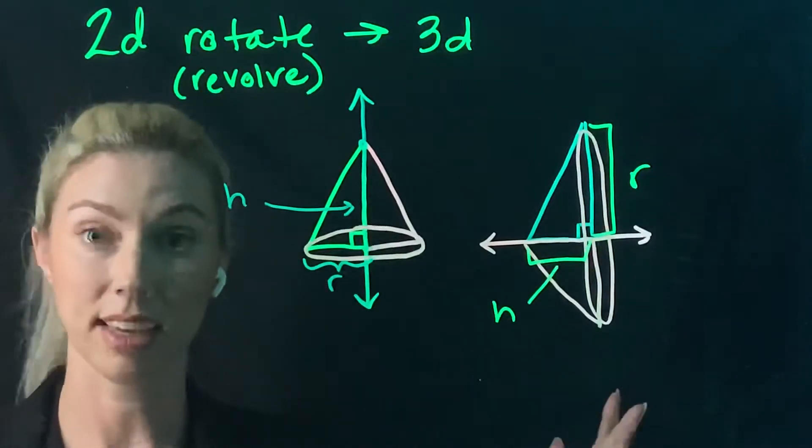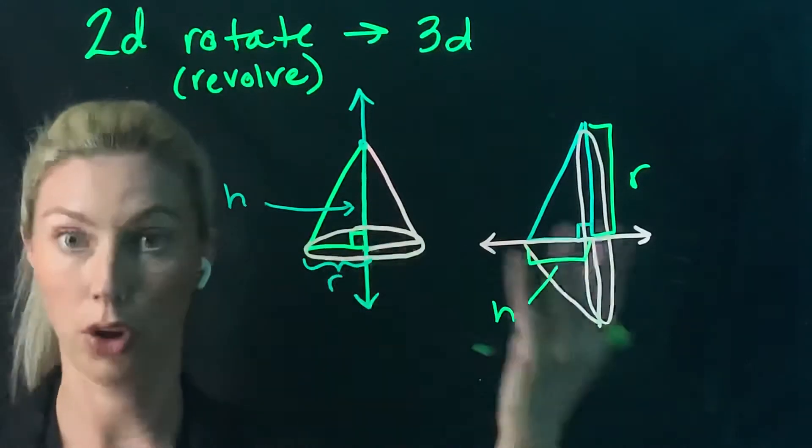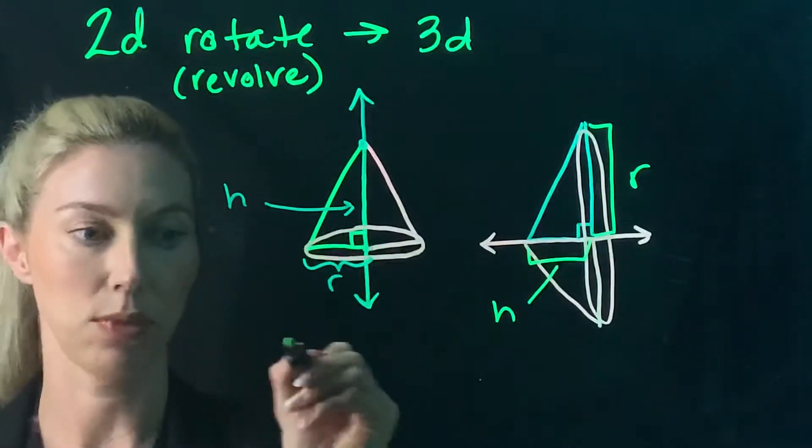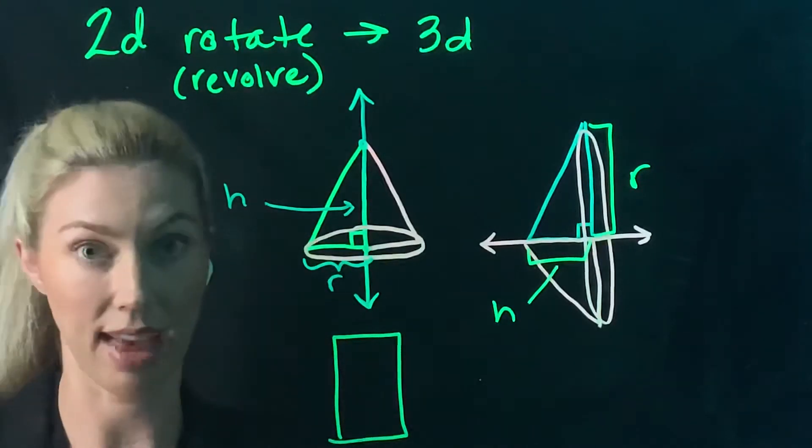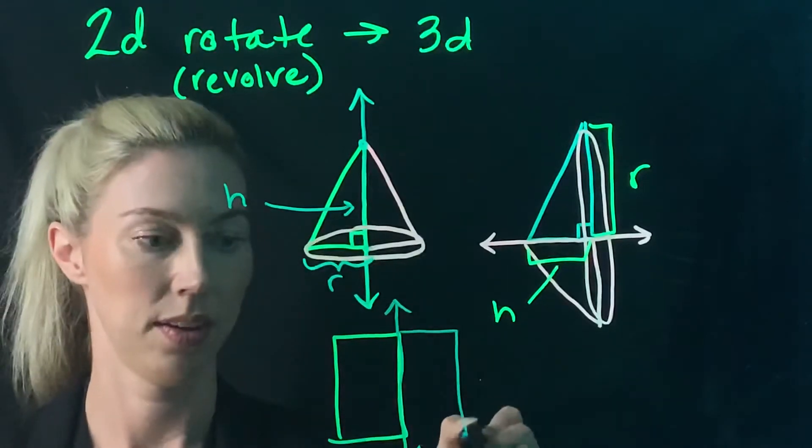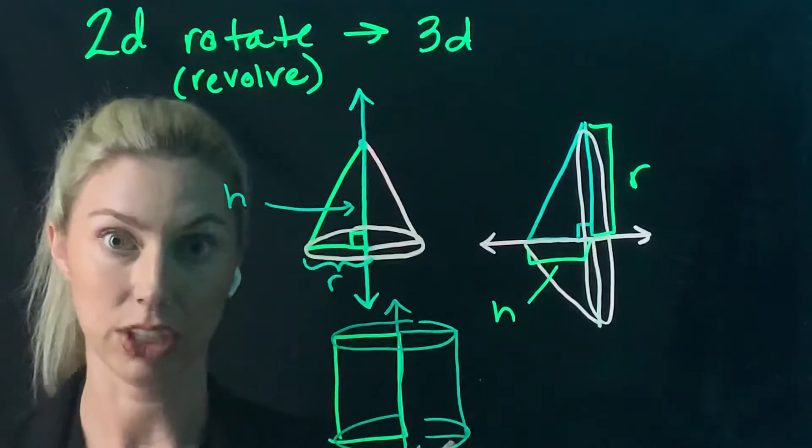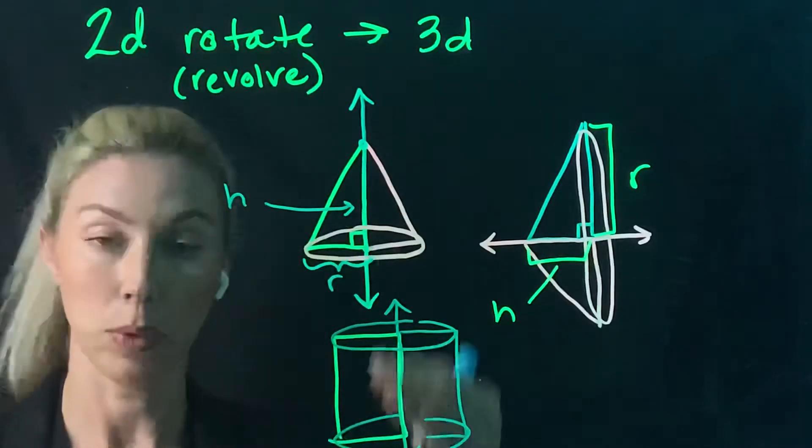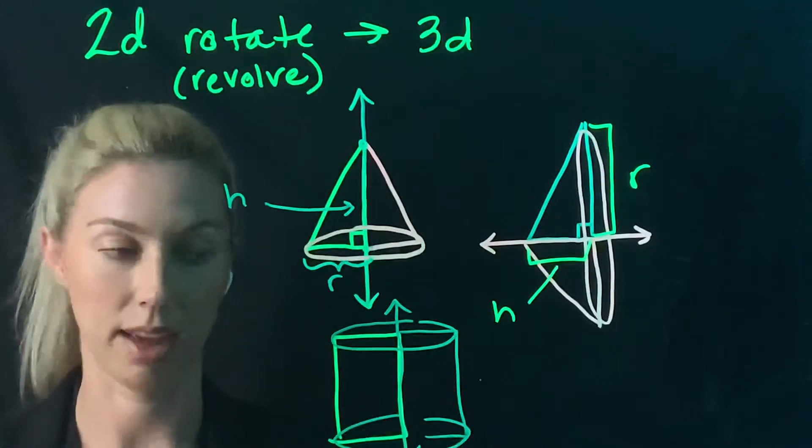This can continue. Sometimes you get shapes that aren't cones. For instance, if we started with a rectangle and revolved that around this axis, it's going to keep doing these revolutions and you'll get a cylinder. It would be the same, a cylinder, if we revolve it around a horizontal line.